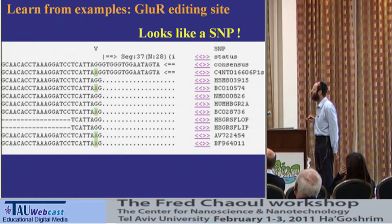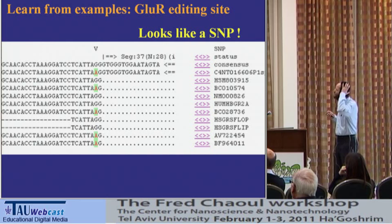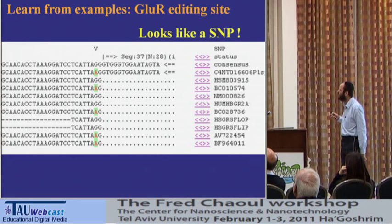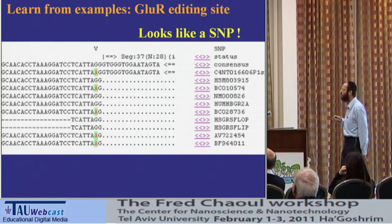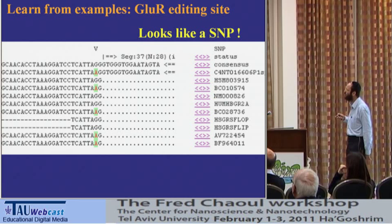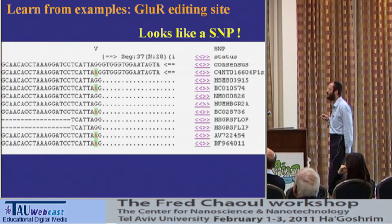The first thing was to learn from examples. This is the first known example of RNA editing — the glutamate receptor. In this plot, the second line is the genomic sequence, and all the lines below are different RNA sequences from GenBank. In this location, the genome shows A, but most of the RNA sequences say G — so we see a mismatch from A to G, as we wanted.